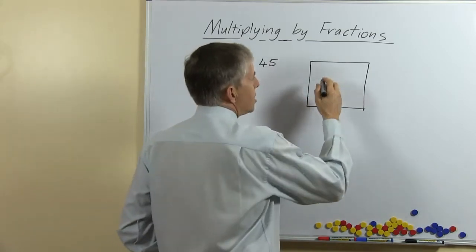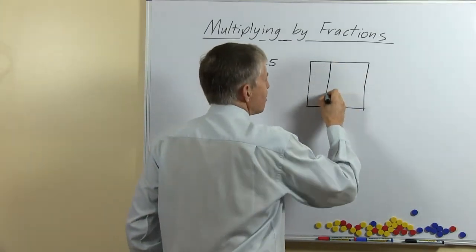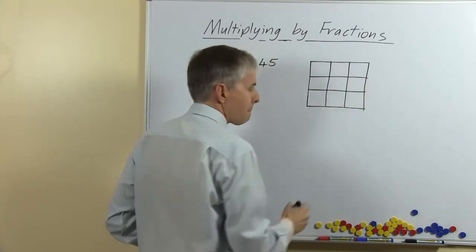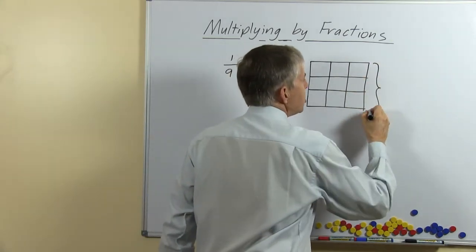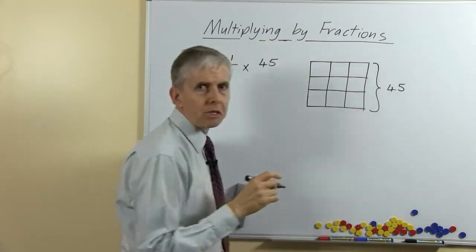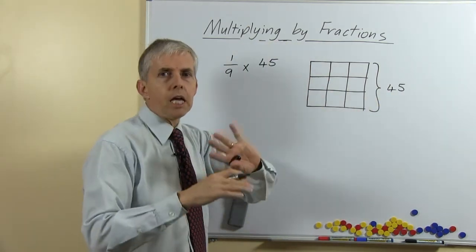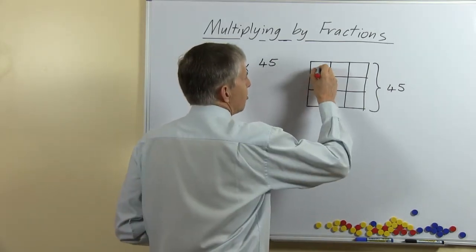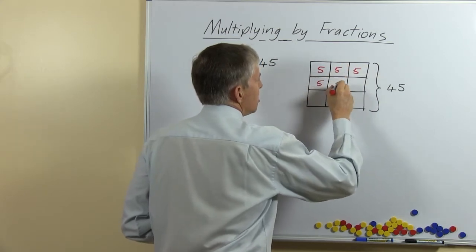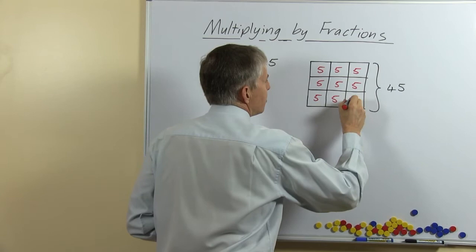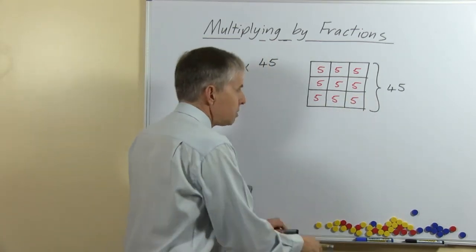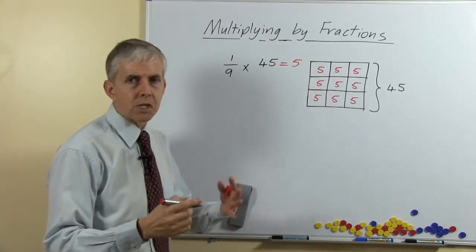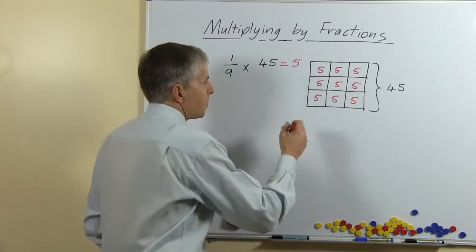Divide the square into nine equal pieces — students might work out that three rows of three is a nice simple way of doing it. Now we want to put 45 objects or pictures in that shape so they are evenly distributed among the parts. Students should quickly understand, providing they know their nine times table, that there are going to be five objects in each section, and that quickly gives us our answer. So one ninth of 45 is the same as dividing by nine.